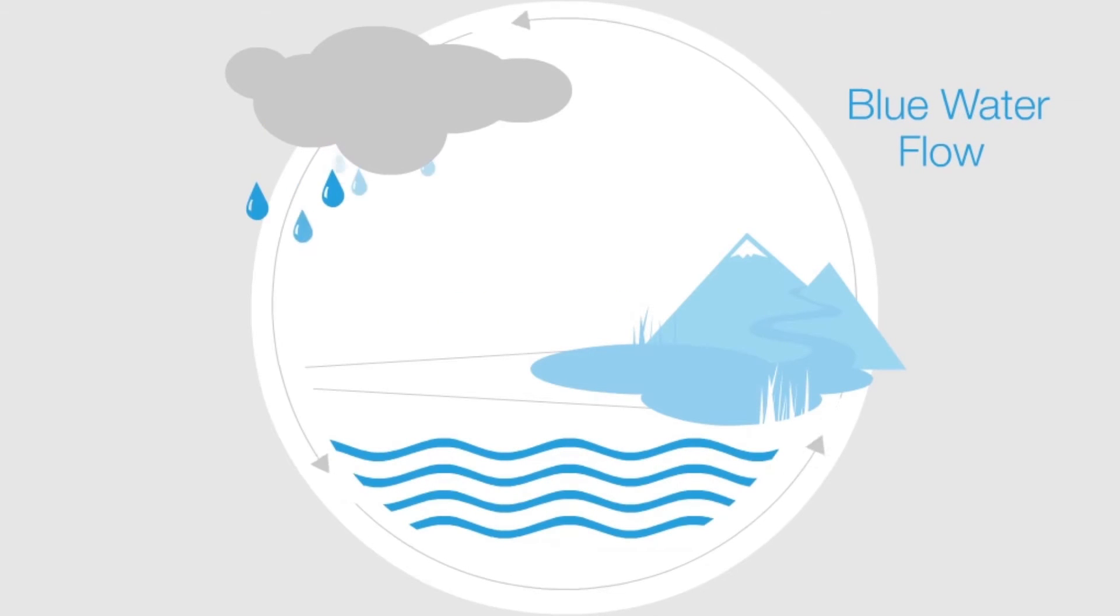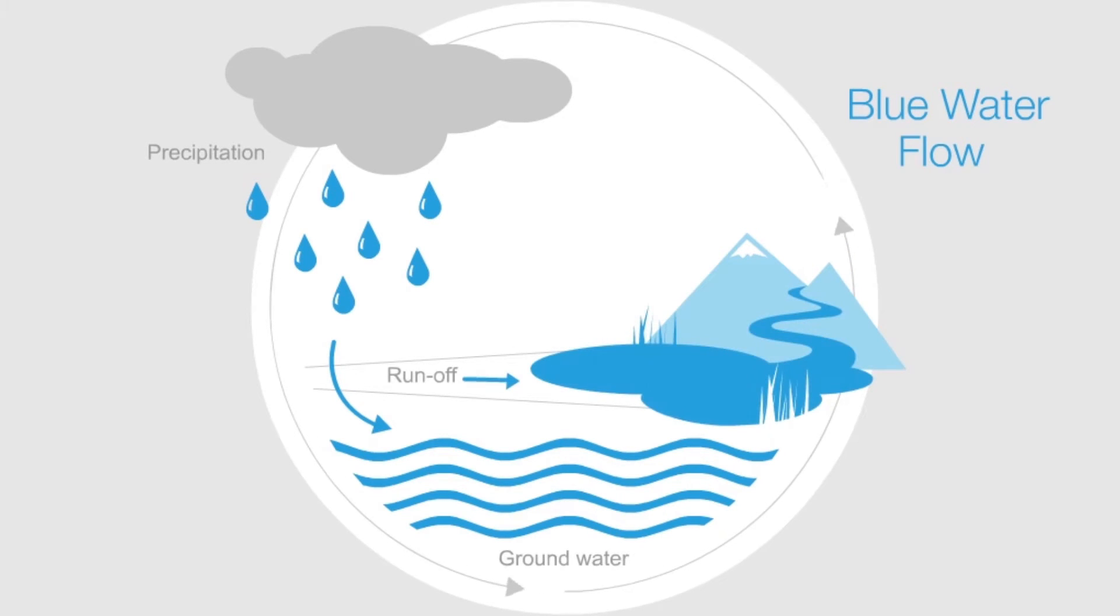The available fresh water is in a continuous cycle. The so-called blue water flow includes the processes of precipitation, storage in the groundwater, lakes and rivers, and evaporation into the atmosphere.